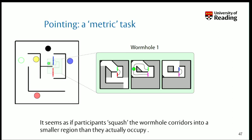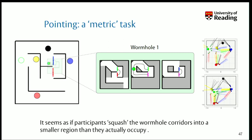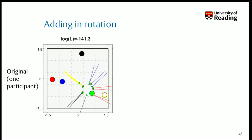You can understand why they do that: they know that if they go from the start location round to blue, they're near the outer edge; round to yellow, near the outer edge; same with red. If they go into the wormhole, weird stuff happens — so maybe the whole thing is squashed in there. It's as if the true location is replaced by a squashed version, which is why we find this explanation of their pointing data. When you put people in this wormhole maze, weird stuff happens to their model of the world.